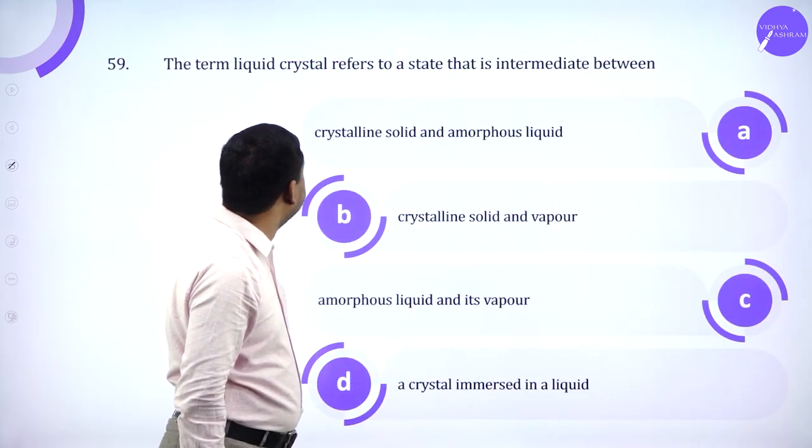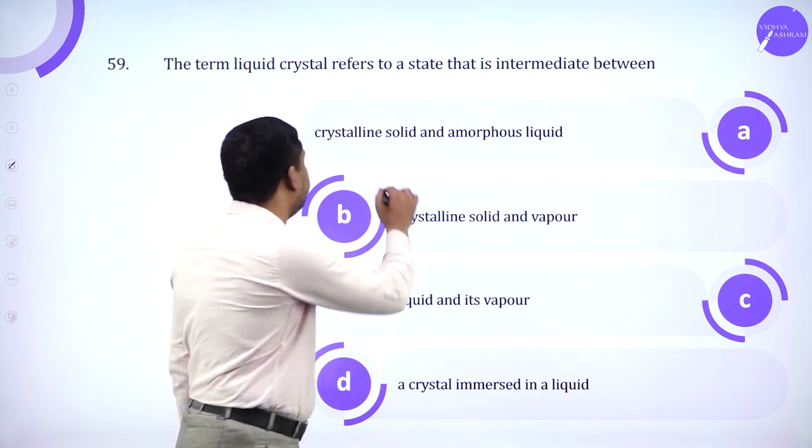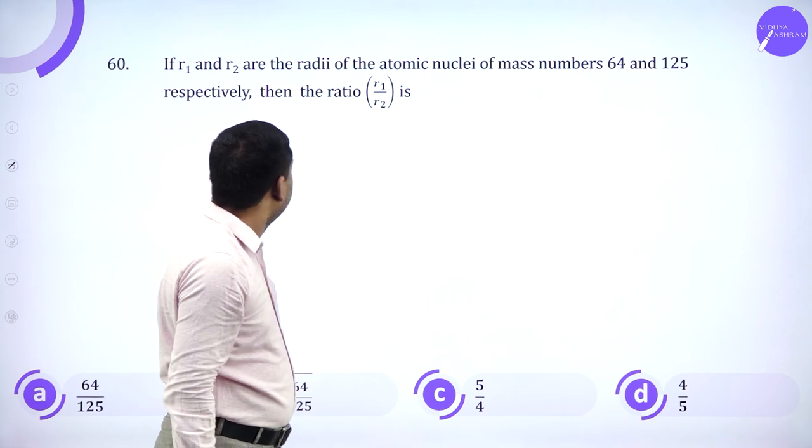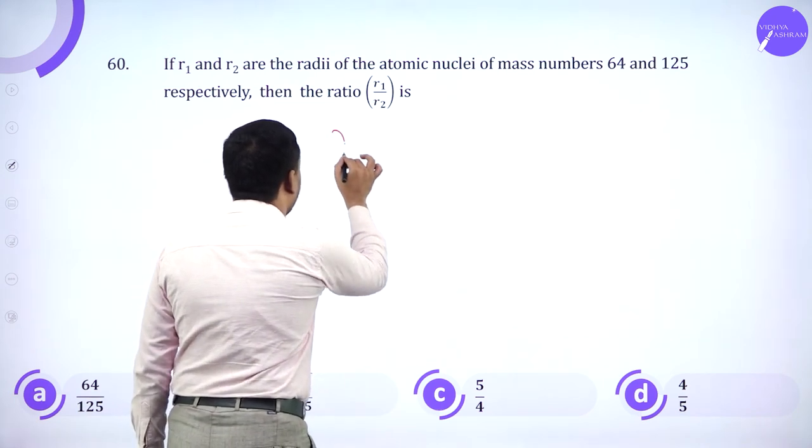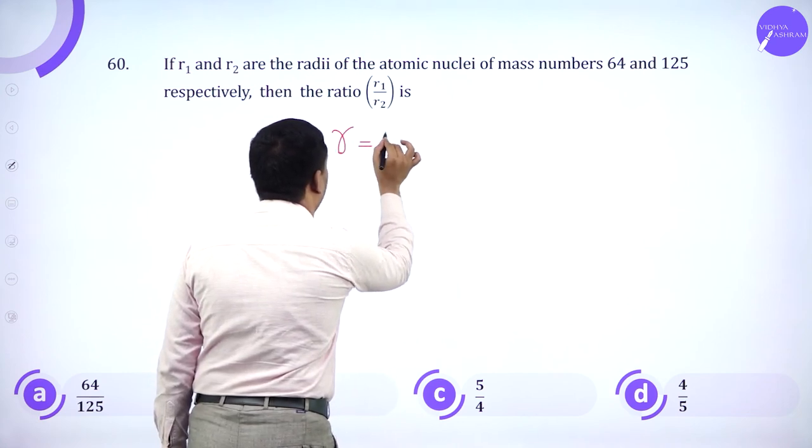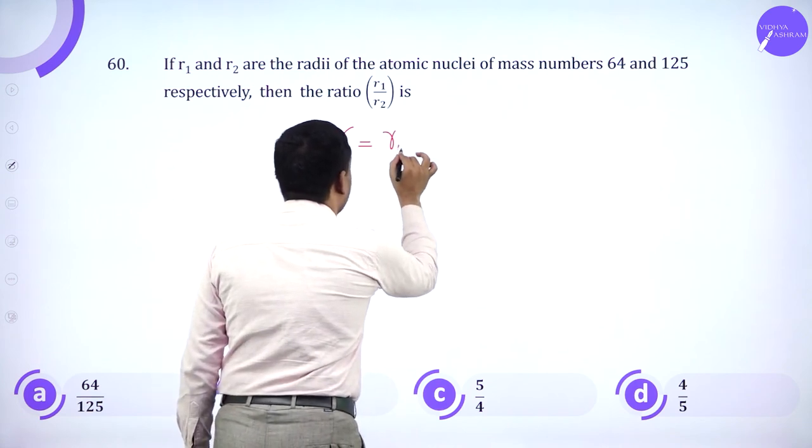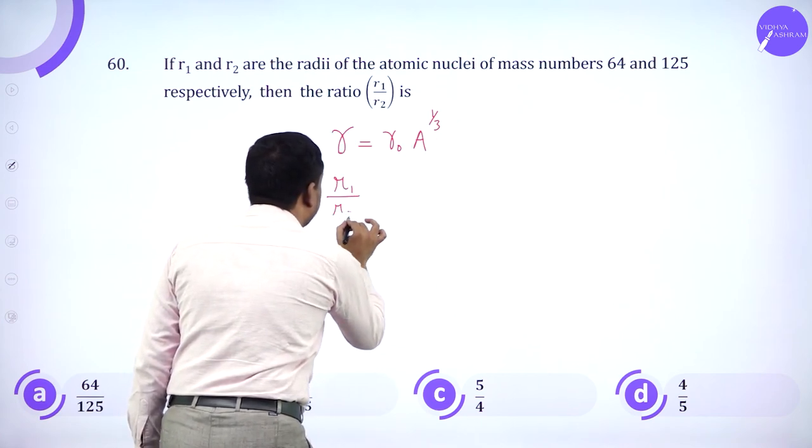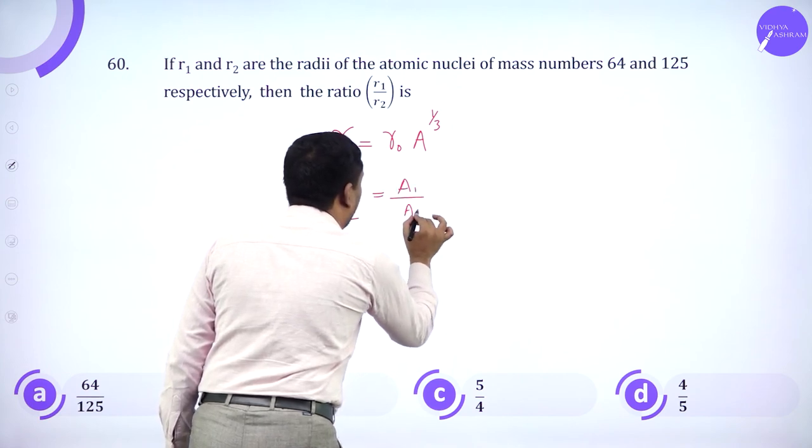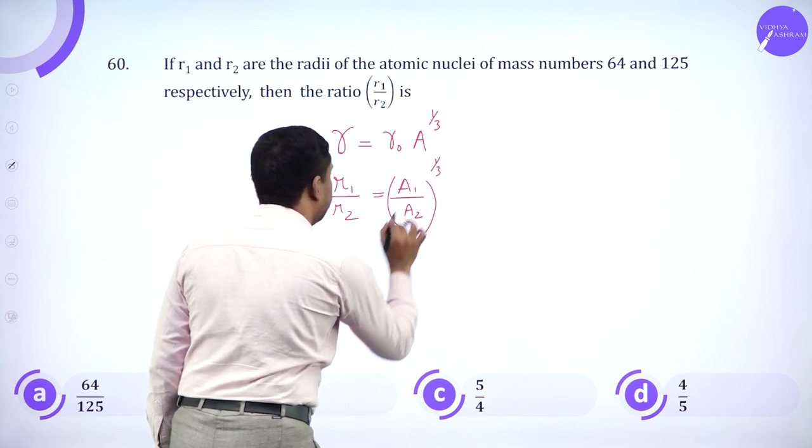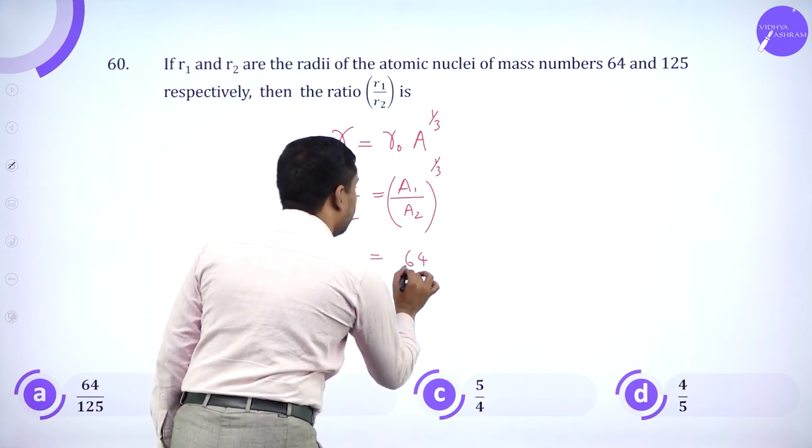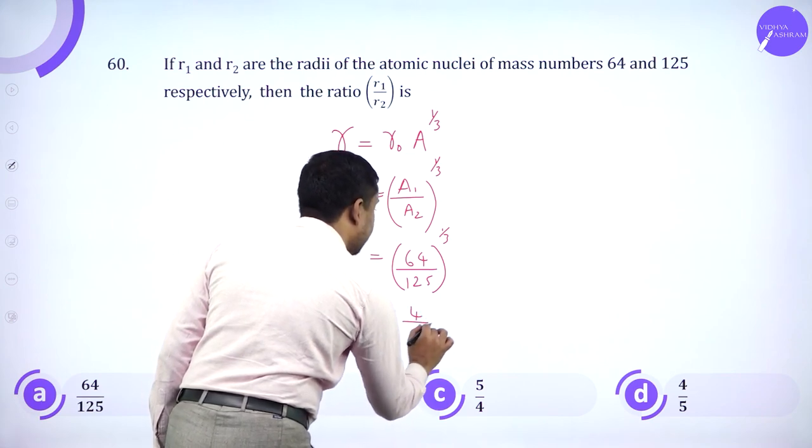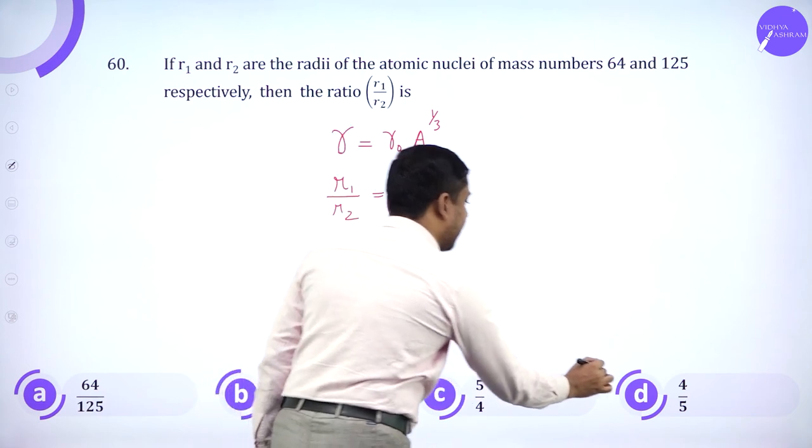The term liquid crystal refers to a state intermediate between crystalline solid and amorphous solid. So we know r is equal to r naught times A to the power 1 by 3. So r1 by r2 is A1 by A2 to the power 1 by 3. A1 is 64, A2 is 125 to the power 1 by 3. So cube roots give us 4 by 5. So the answer has to be 4 by 5.